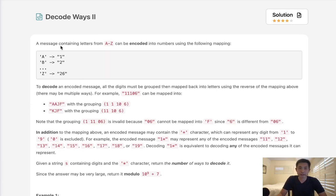Welcome to July's LeetCode Challenge. This problem is called Decode Ways 2. A message containing letters from A to Z can be encoded into numbers using the following mapping: A is 1, B is 2, Z is 26.